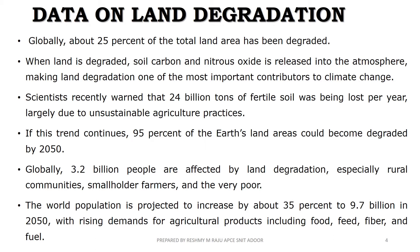Globally, there is about 25% of land that is degraded. This land degradation results in soil carbon, nitrogen, oxygen and nitrous oxide being released into the atmosphere, contributing to climate change. There are only 24 billion tons of fertile soil remaining. If this trend continues, by 2050 we will find that 95% of land is degraded, with 9.7 billion people to feed.